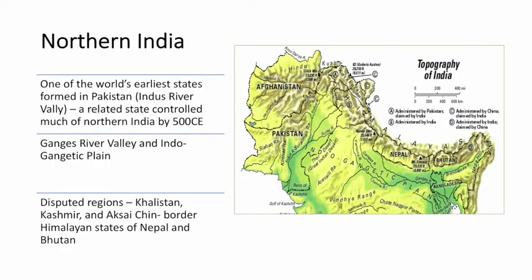We can also disaggregate India itself and talk about different geographical regions. Northern India is really interesting, especially if you want to think about the development of India through time up to the contemporary period. If we're thinking about India as a geopolitical state, it's linked to some of the very earliest states in the world. The Indus River Valley, which is today in Pakistan, is one of the world's earliest states.